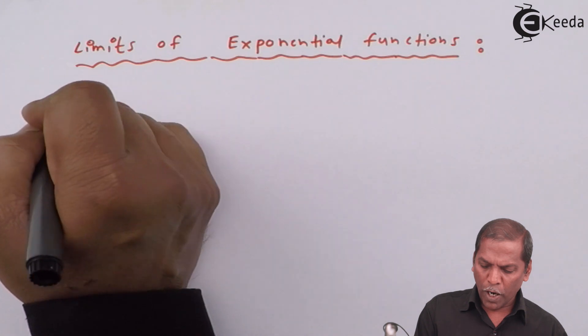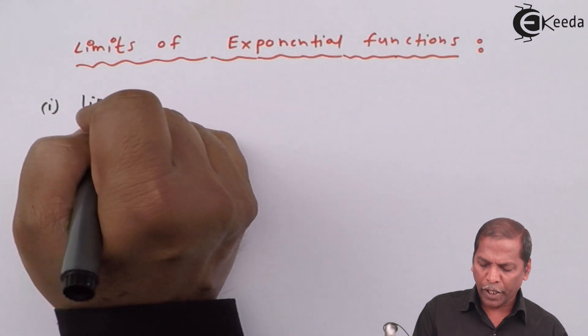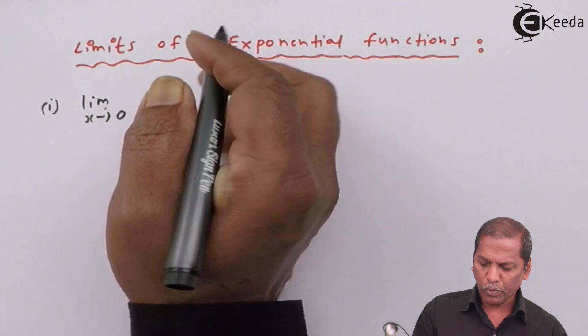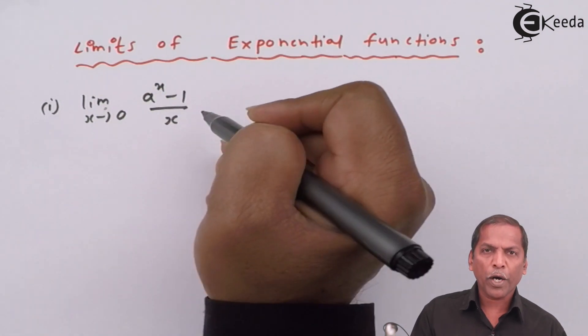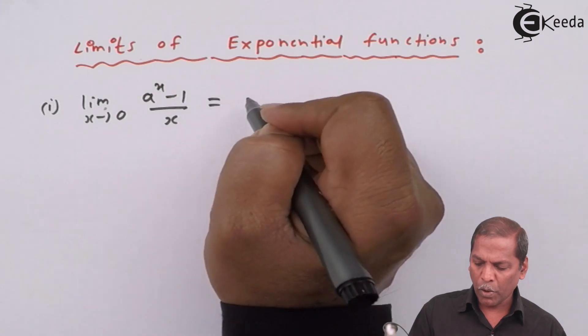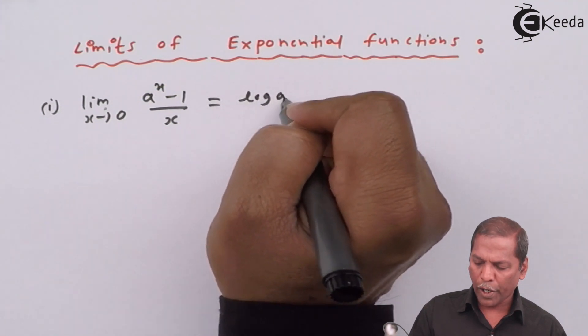Formula 1 is limit x tends to 0, a raised to x minus 1 upon x, is equal to log a.